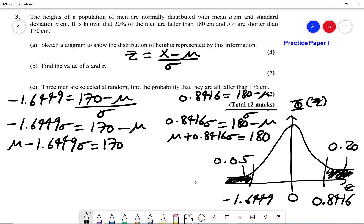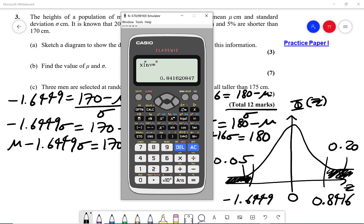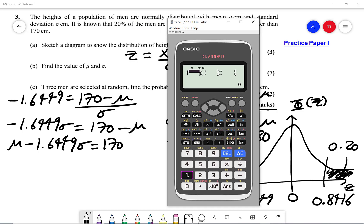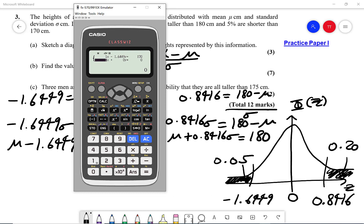So again we're going to use a calculator here to solve this. We're going to go back to the main menu, press the menu here and we press alpha, press the minus sign and we're going to choose option one for simultaneous equation. It's going to be two unknowns and we can put our coefficients in. So the coefficient of mu is 1, then we've got minus 1.6449 plus equals 170 plus equals. Then we go to the next equation, which is going to be the coefficient of mu is 1, then we've got 0.8416 plus equals and then we've got 180, then press equals.